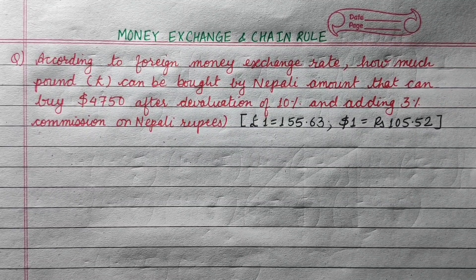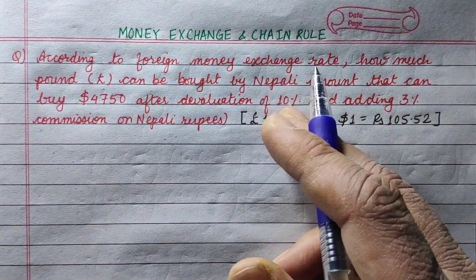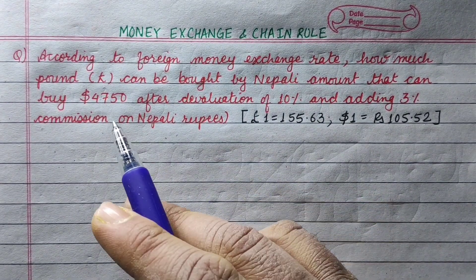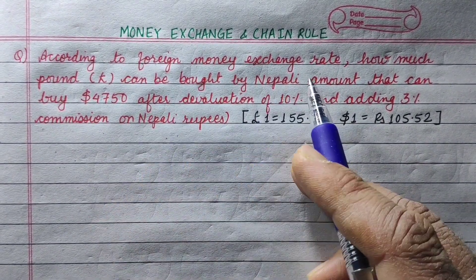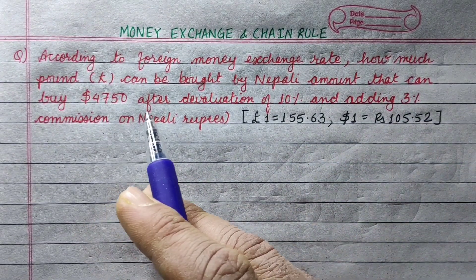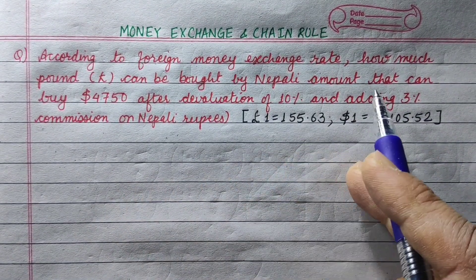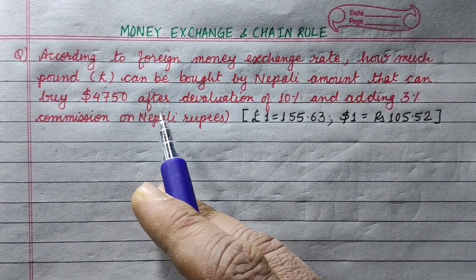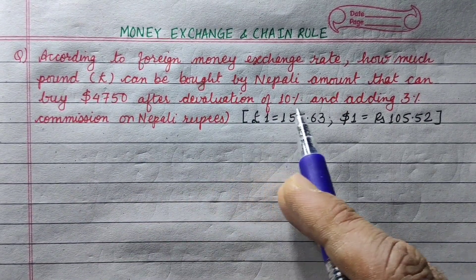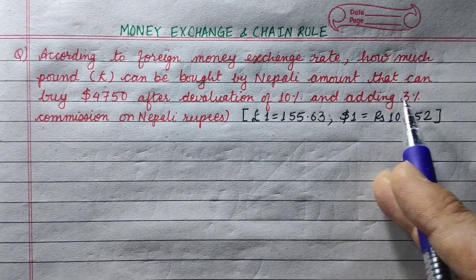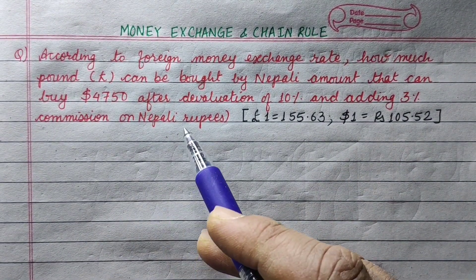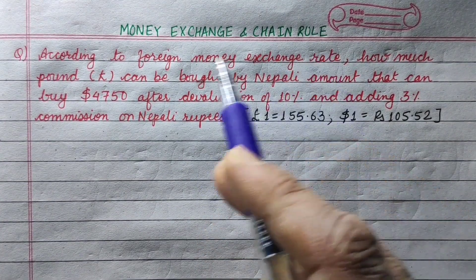Hi everyone. Today I am going to take a long question for money exchange. According to foreign money exchange rate, how much pound can be bought by Nepali amount that can buy $4750 after devaluation of 10% and adding 3% commission on Nepali rupees?